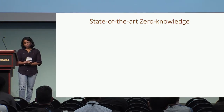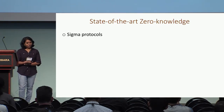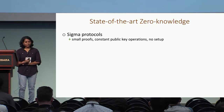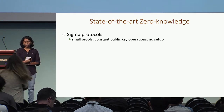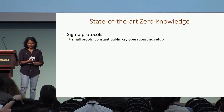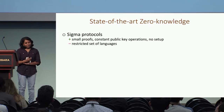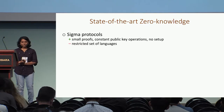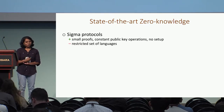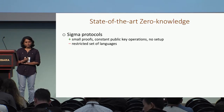Looking at the state of the art in zero-knowledge today, we have sigma protocols that are efficient in terms of proof size and public key operations for both the prover and the verifier, and they do not rely on any setup assumptions. But they apply only to a restricted set of languages, like proving knowledge of discrete logarithm of a public value, or roots, or polynomial relationships among committed values.